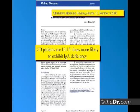Celiac patients are 10 to 15 times more likely to exhibit IgA deficiency. So if you're just checking IgA, you might miss it, because they're 10 to 15 times more likely to have an IgA deficiency. Their systems are worn out — they can't produce IgA anymore.